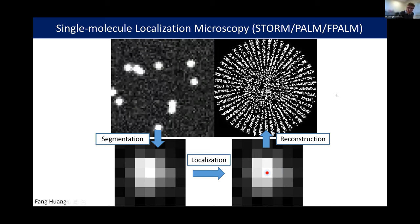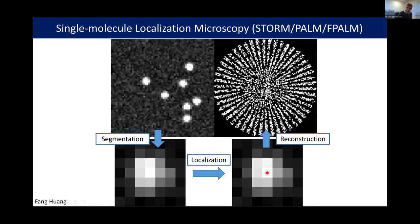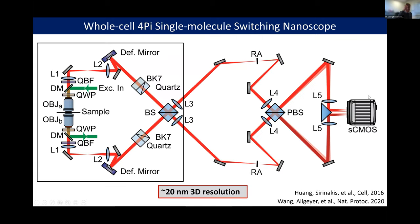This has been around since 2006. I won't cover many details here — I just want to show one advanced setup we have built: the 4π single-molecule switching setup, where we use two opposing objective lenses, detect fluorescence from both sides, and combine it coherently. We use single-photon interference to get our interference pattern, obtaining a super-resolution image with about 20-nanometer resolution in all three directions.